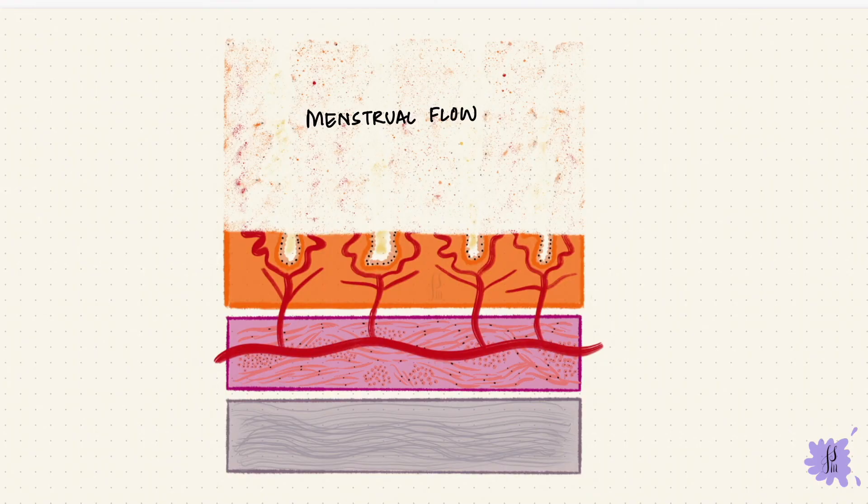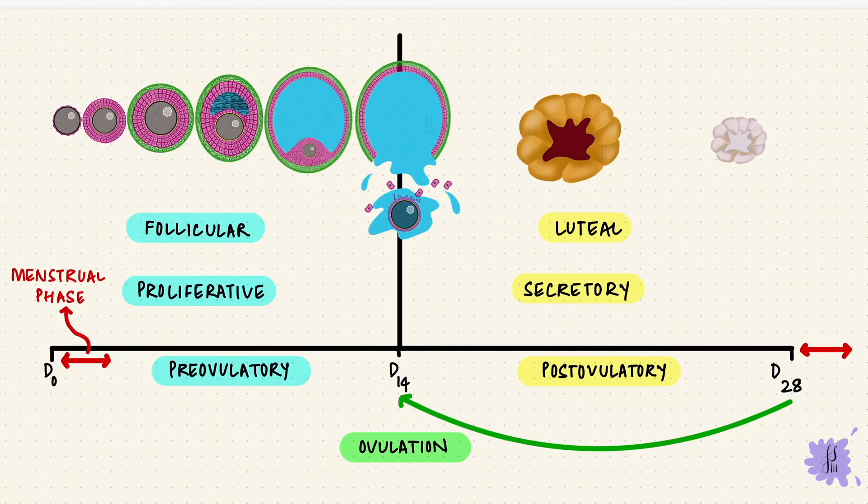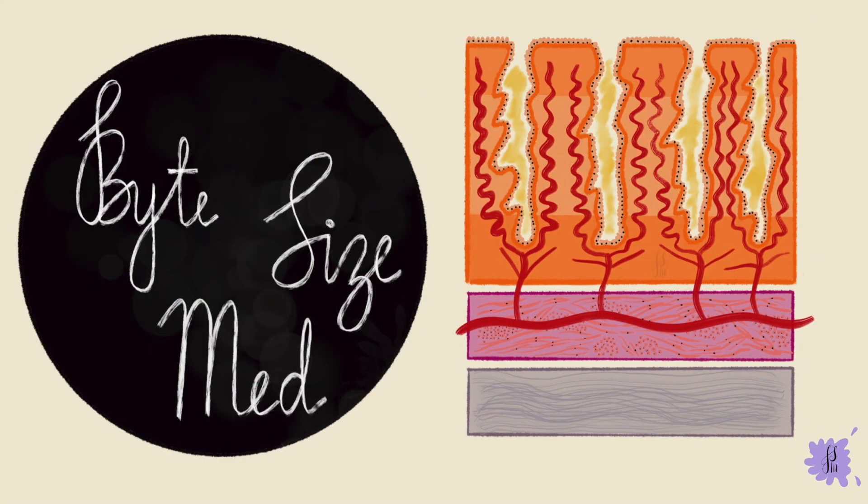The stratum functionalis getting sloughed off means that the stratum basalis is what's left behind, with its straight arteries. The basal layer is now left with that job of regenerating the sloughed off endometrium in the post-menstrual phase, which is the beginning of the proliferative phase. And then the cycle repeats again.